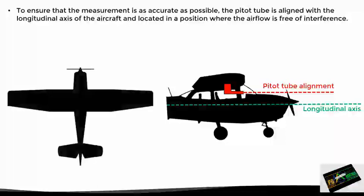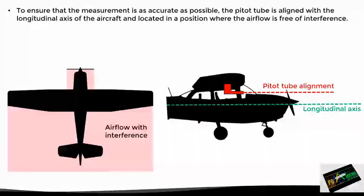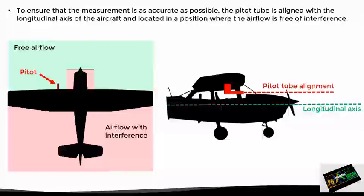In order to ensure that the pitot tube performs an adequate measurement, it is important that it is aligned with the longitudinal axis of the aircraft, as we can see in this example. Also, it must be located in a part where the airflow is free from any interference, because when an aircraft moves through the air the airflow is altered by parts of the plane like the propeller or the wings, and this interfering flow is not suitable for measuring the total pressure. Therefore, the pitot tube should be located such that it is exposed to the proper, free airflow.